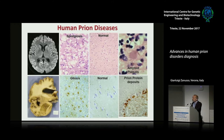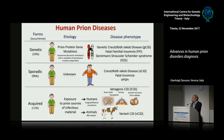Here we have the comparison with a normal brain. You see the difference. And another aspect is the presence of gliosis — the reactive gliosis that we see in human prion disorders.